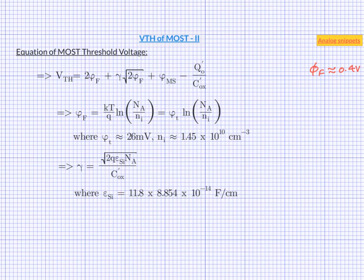11.8 is relative permittivity of the silicon and this number is the permittivity of the vacuum. Na is now familiar substrate doping concentration and C ox is the unit capacitance of gate oxide. This unit capacitance depends on the gate oxide thickness.